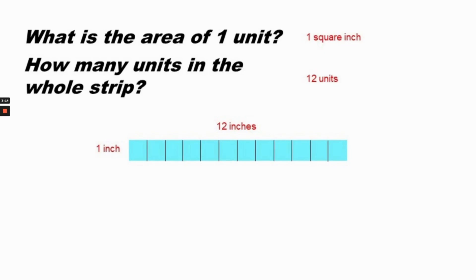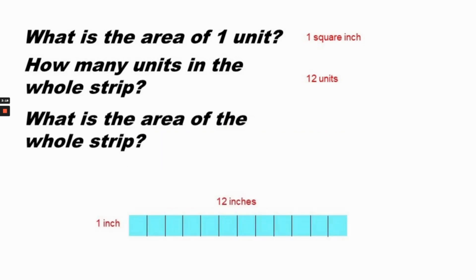There are 12 units in the whole strip. So what is the area of the whole strip? The area is 12 square units, or 12 square inches, because we know that we are measuring in inches.